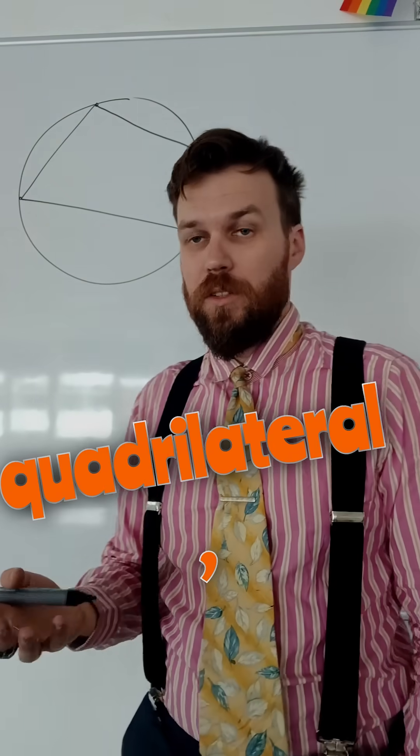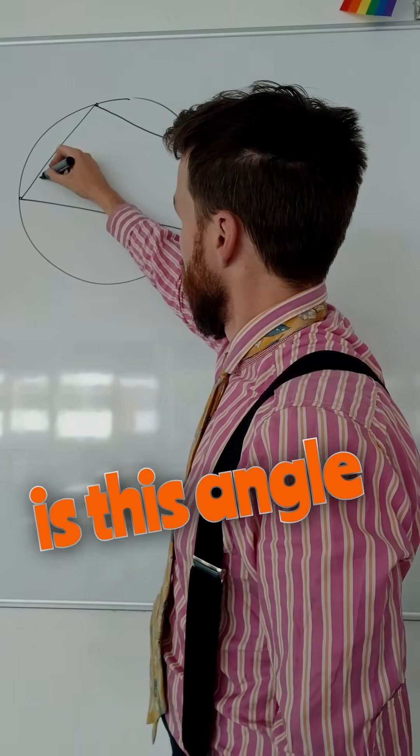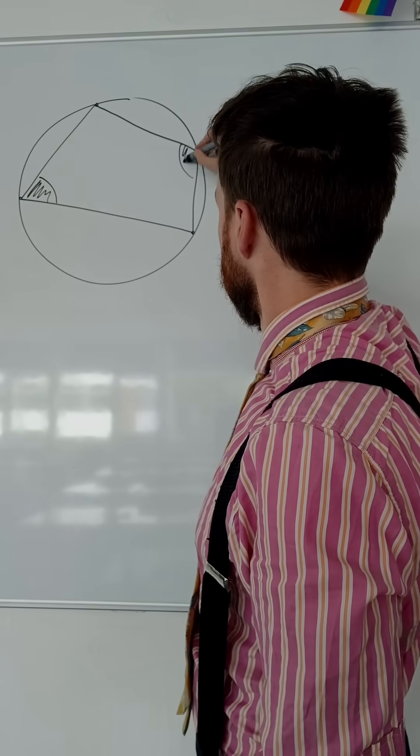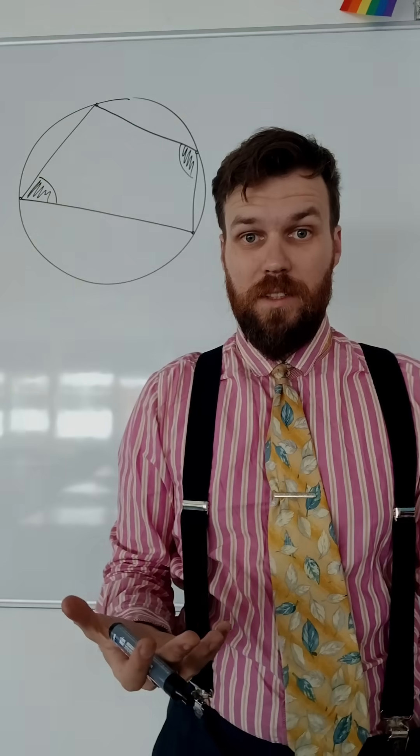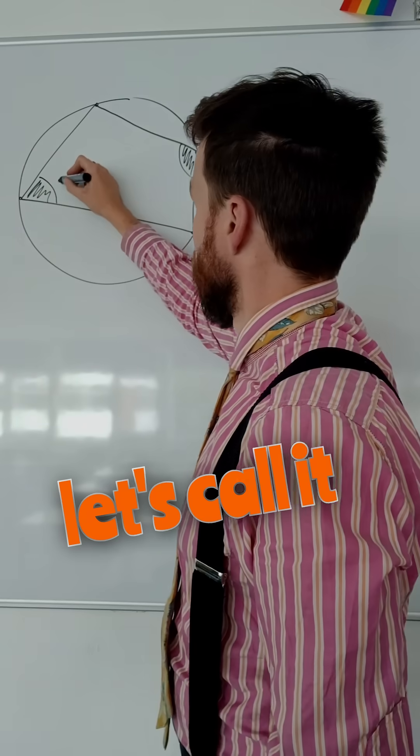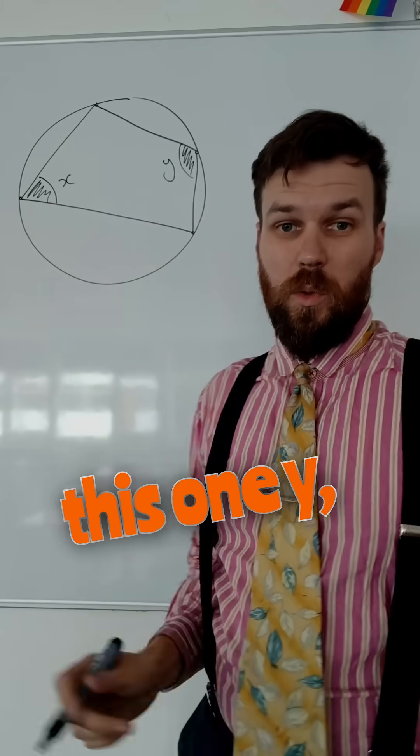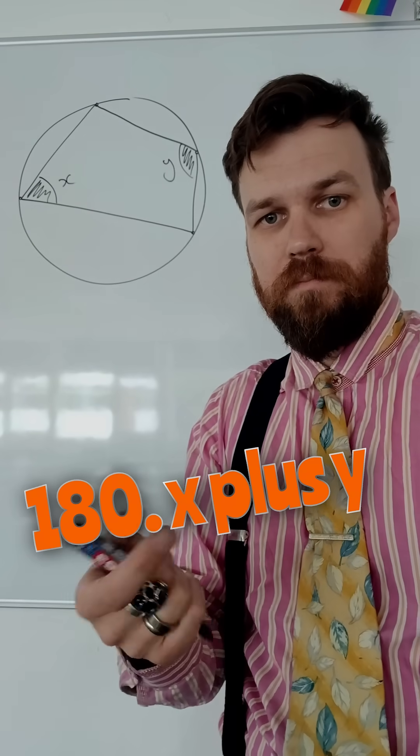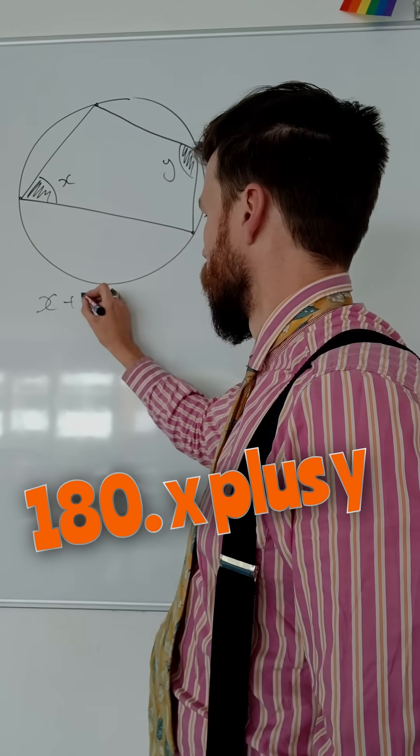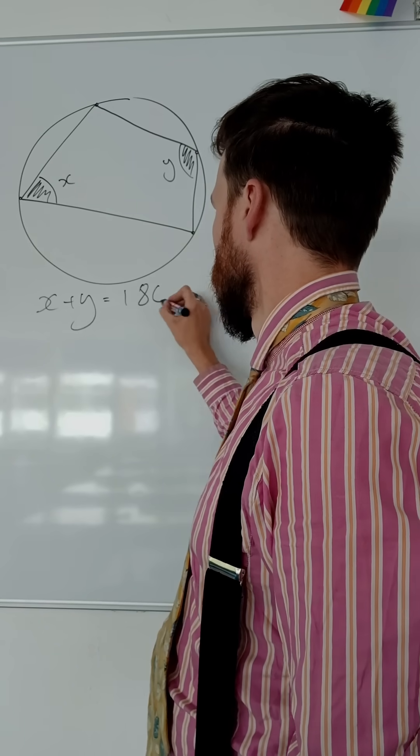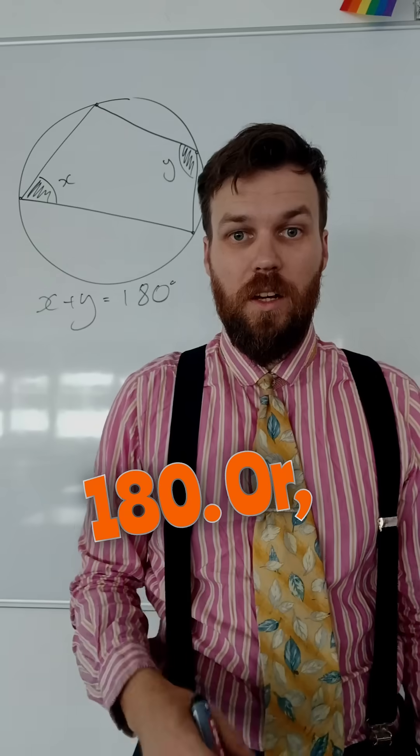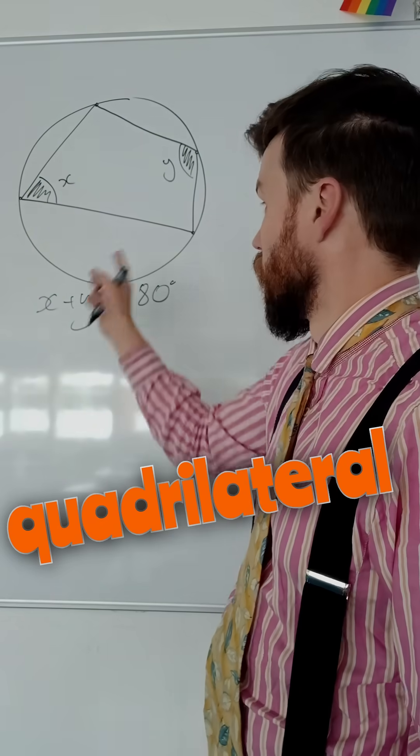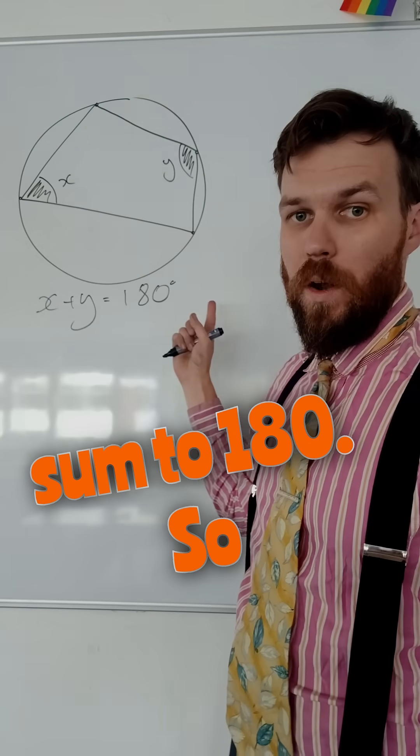Now, the key thing about cyclic quadrilaterals and the circle theorem part is this angle and this angle are related. This angle, let's call it x, and let's call this one y, they sum to 180. x plus y must equal 180, or technically, opposite angles in a cyclic quadrilateral sum to 180.